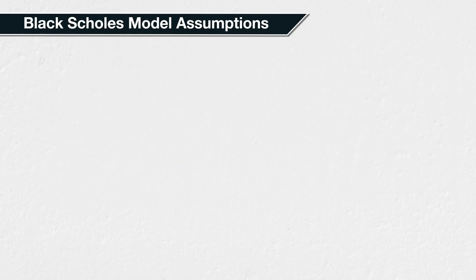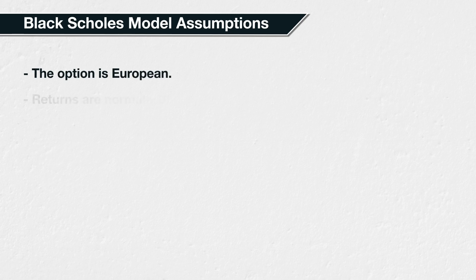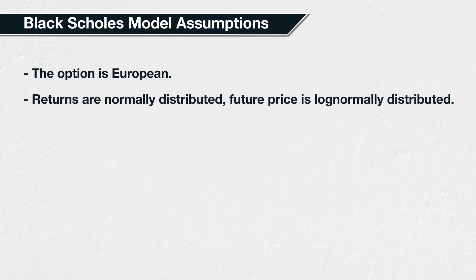The following are assumptions made in the model, with some only applying to relevant iterations of the model. The option is European, and can therefore only be exercised at expiration. Underlying price returns are normally distributed, and the future price is therefore log-normally distributed. As we discussed in lectures 7.5 and 7.6, this is not usually completely accurate, which is part of what leads to the volatility smile and skews.